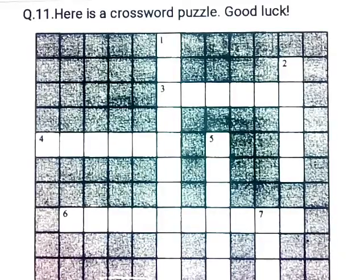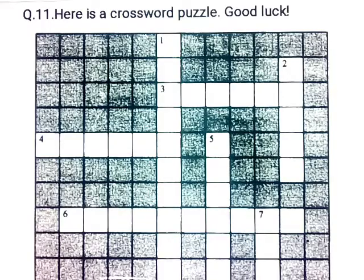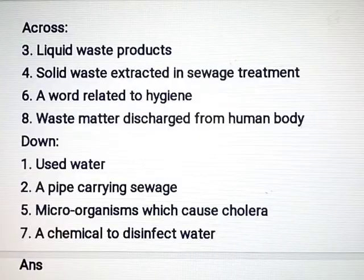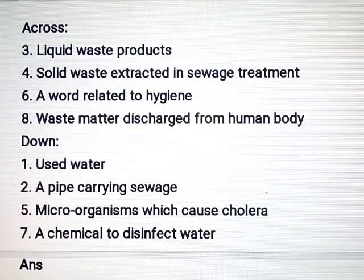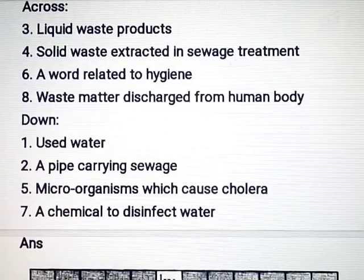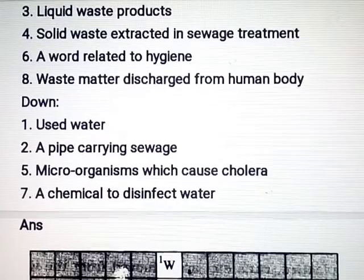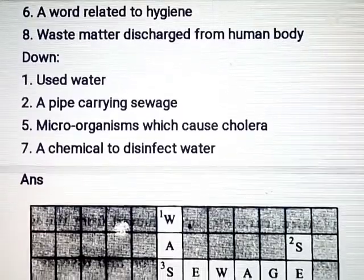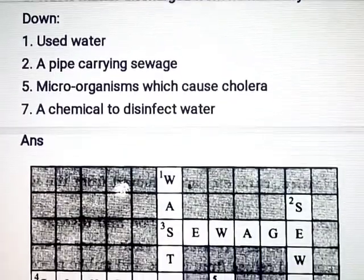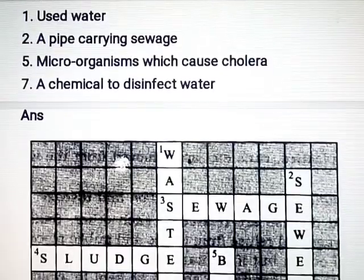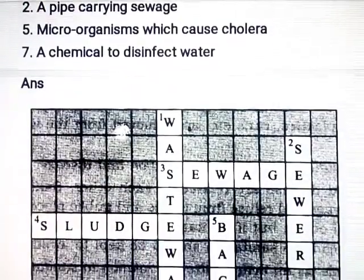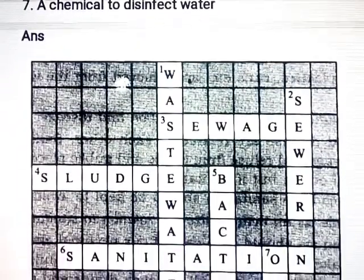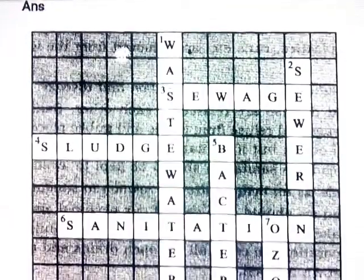Question number 11: Here is a crossword puzzle. Good luck! Across: 3. Liquid waste products. 4. Solid waste extracted in sewage treatment. 6. A bird related to hygiene. 8. Waste matter discharged from human body. Down: 1. First used water. 2. A pipe carrying sewage. 5. Microorganisms which cause cholera. 7. A chemical to disinfect water.